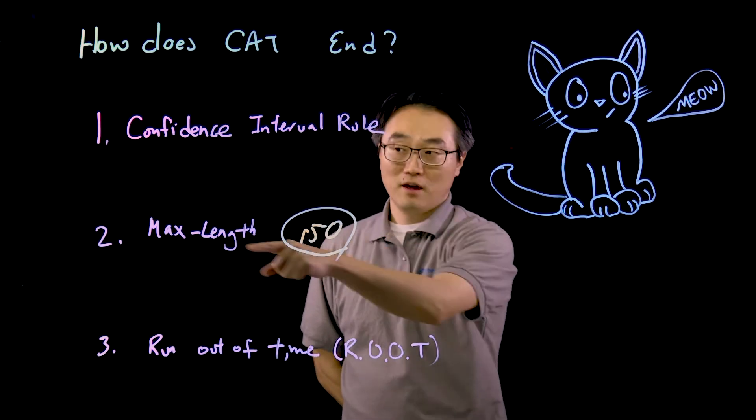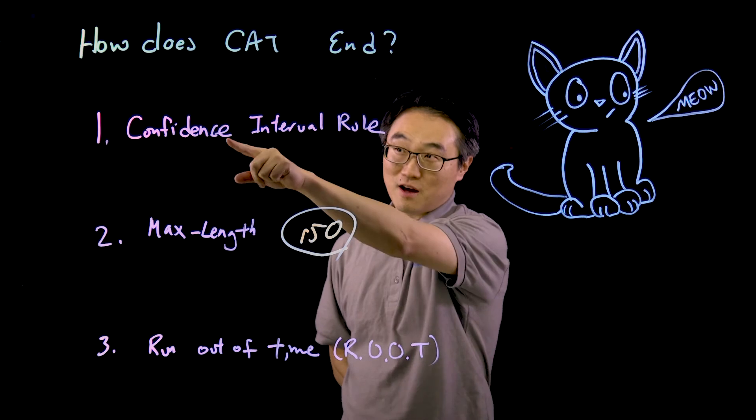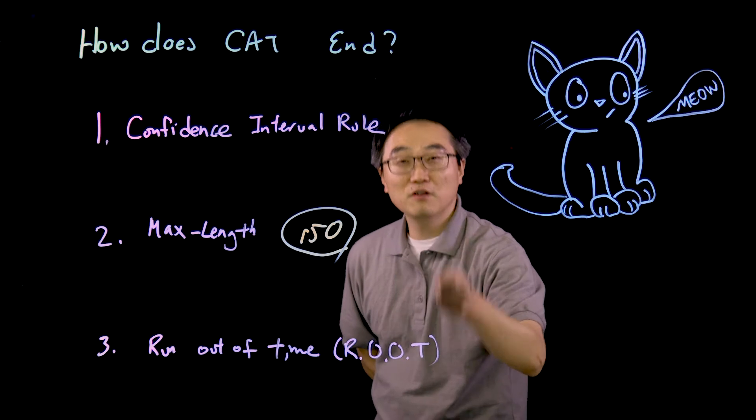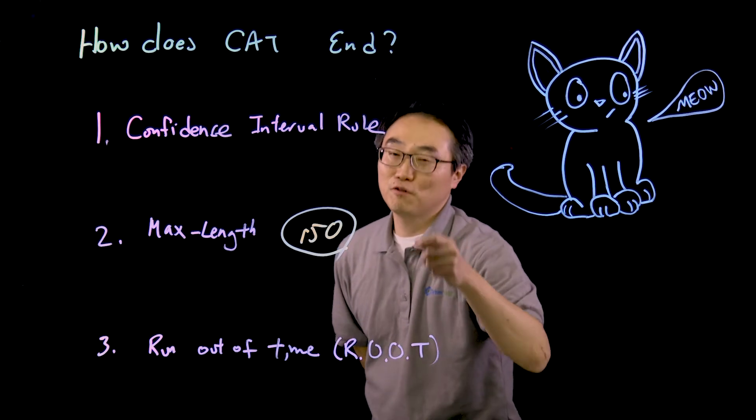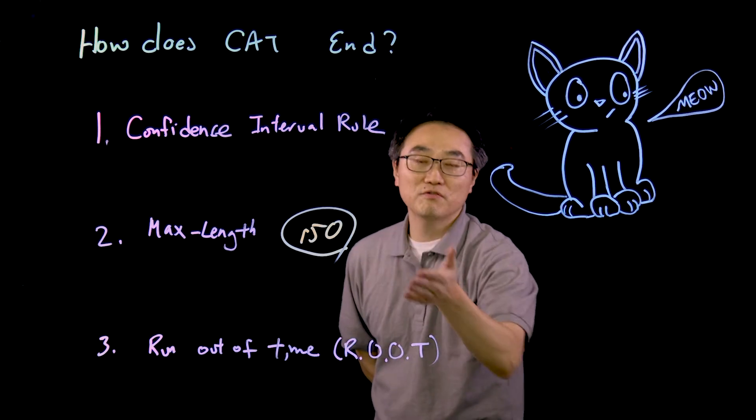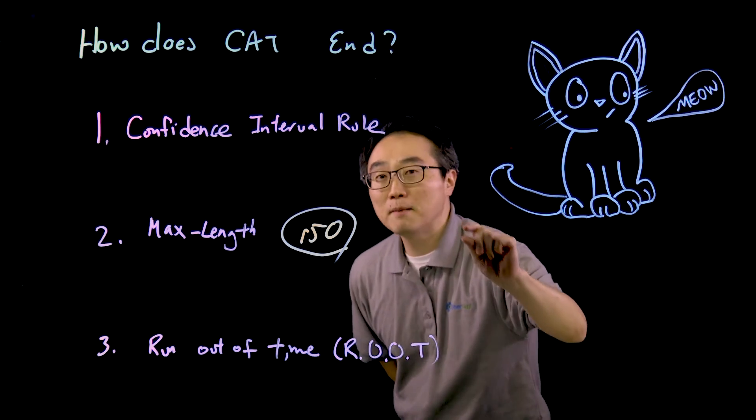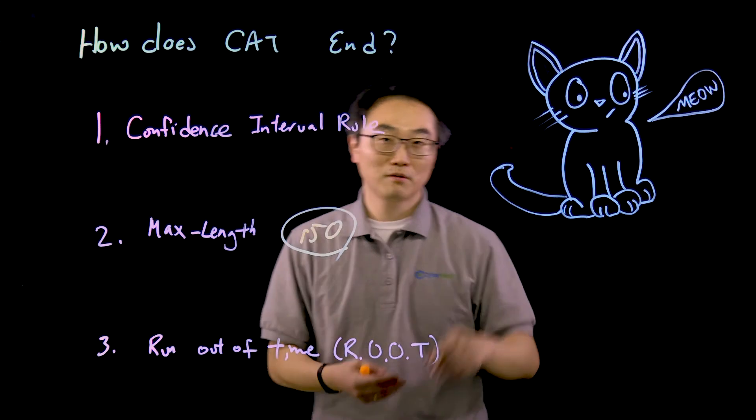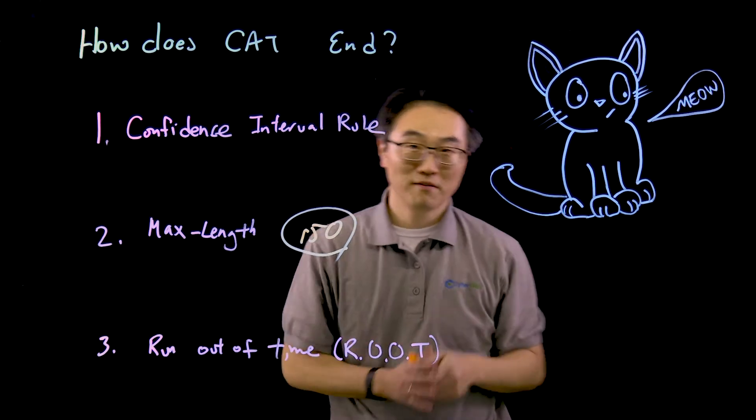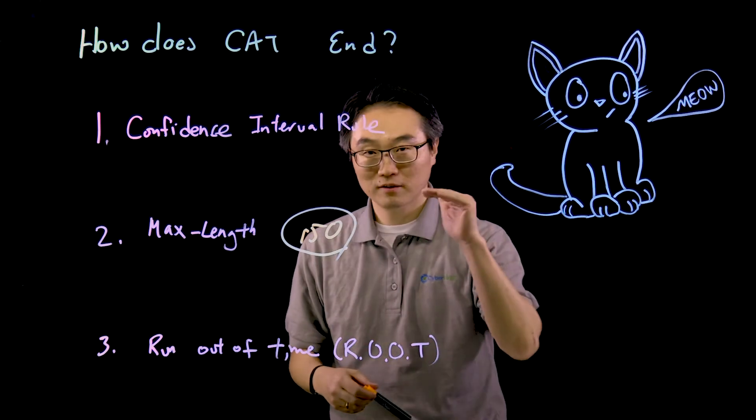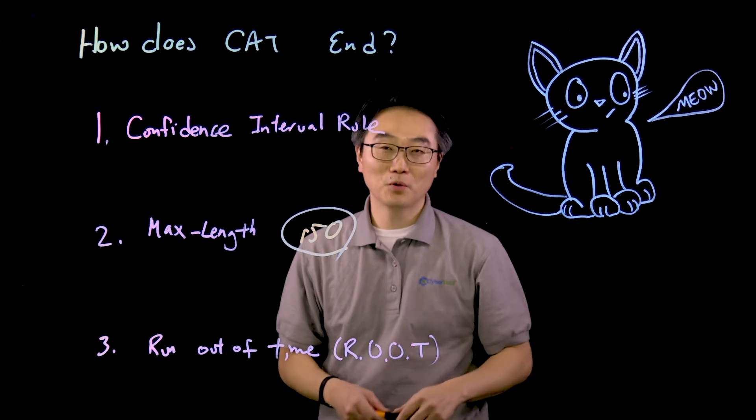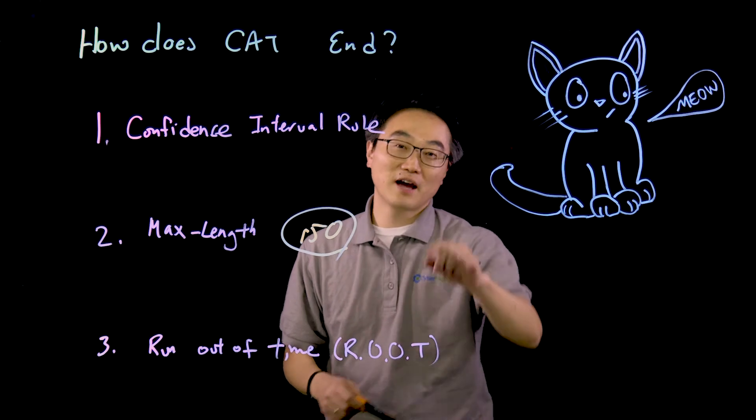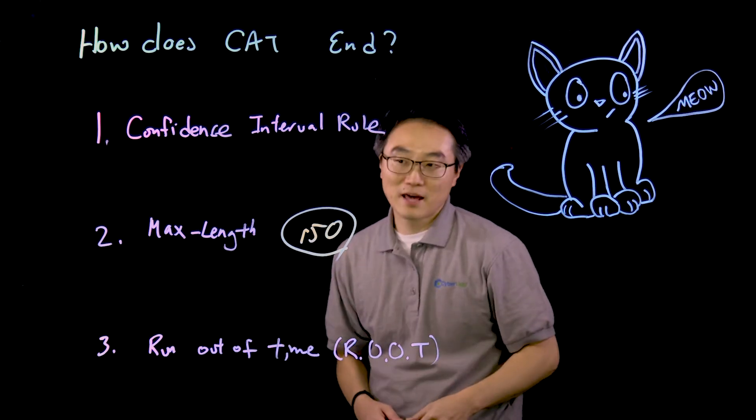If you're fully above, because of rule number one you'll pass. If it's fully below because of the Confidence Interval Rule, you'll fail. But they're going to continue to throw you questions. If you somehow run out of questions at 150, they're going to look at that midpoint of the confidence interval and say, if this midpoint is above the passing line, this candidate will pass. If that midpoint is below the passing line, you will fail. That's what Maximum Length Rule is—about 150 questions.